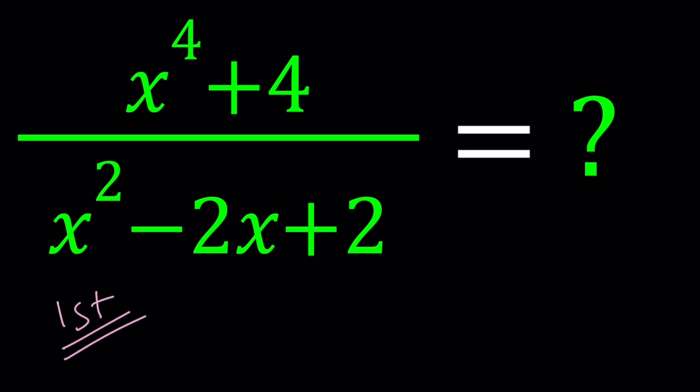For my first method I am going to factor both the numerator and the denominator. Can we factor the numerator? It's a sum of squares maybe? Yes — sum of squares can be factored if you consider complex numbers. If you like complex numbers, check out my other channel A plus B I.